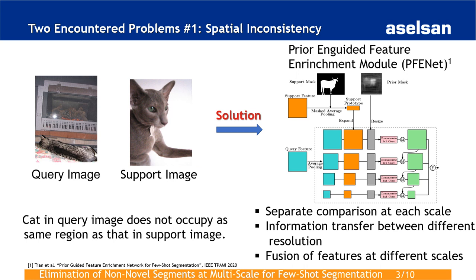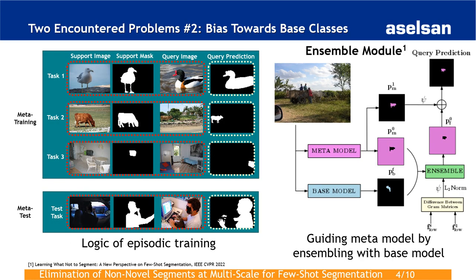The first problem is the Spatial Inconsistency problem, caused by the discrepancy between the size of the object in query and support images. For example, a CAD in the query image does not occupy the same area as in the support image. PFYNet solves this problem by comparing support prototypes with query feature maps at different scales and providing a controlled information flow across different scales.